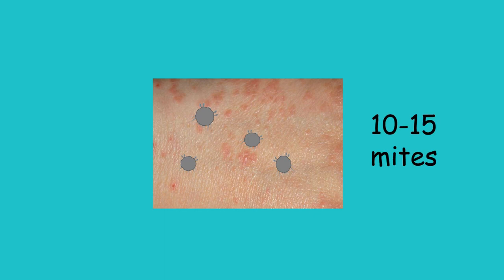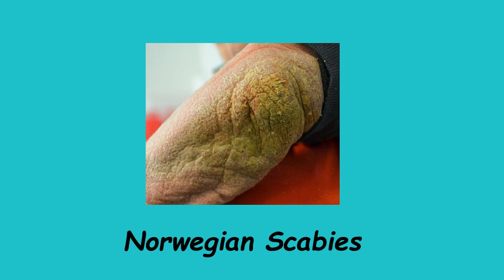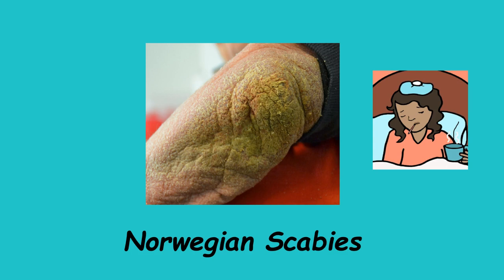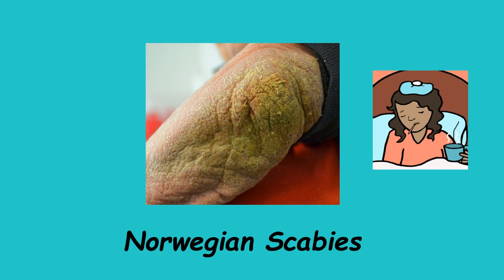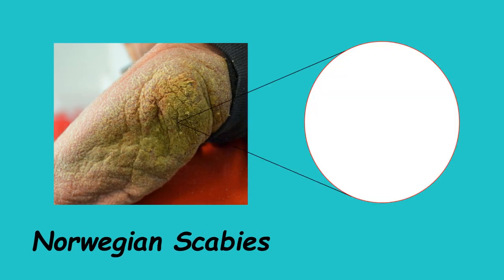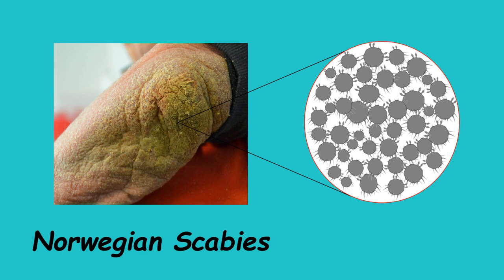The scabies mite lives on the skin. Only a few mites live normally on the human skin, whereas a person diagnosed with scabies usually has 10–15 mites living on the skin. Crusted scabies, also known as Norwegian scabies, is a condition usually seen in those who do not have a properly functioning immune system. It is a severe form of scabies which can have millions of mites present at a time on the skin.